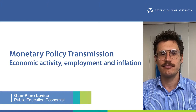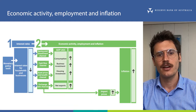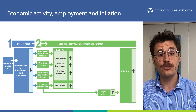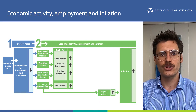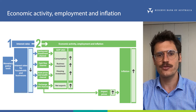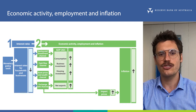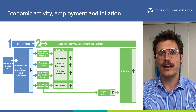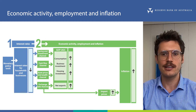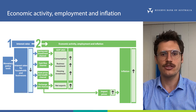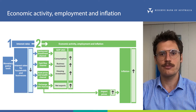Hi, Gigi from the RBA. This video is our second on monetary policy transmission. In the last video, we mainly looked at how changes in interest rates affect aggregate demand. We learned that this works through four channels: the savings and investment channel, the cash flow channel, the asset prices and wealth channel, and the exchange rate channel. In this video, we're going to explore how changes in aggregate demand flow through to other indicators of Australia's economic performance, such as employment and inflation. We'll also talk about some other important considerations for monetary policy transmission.